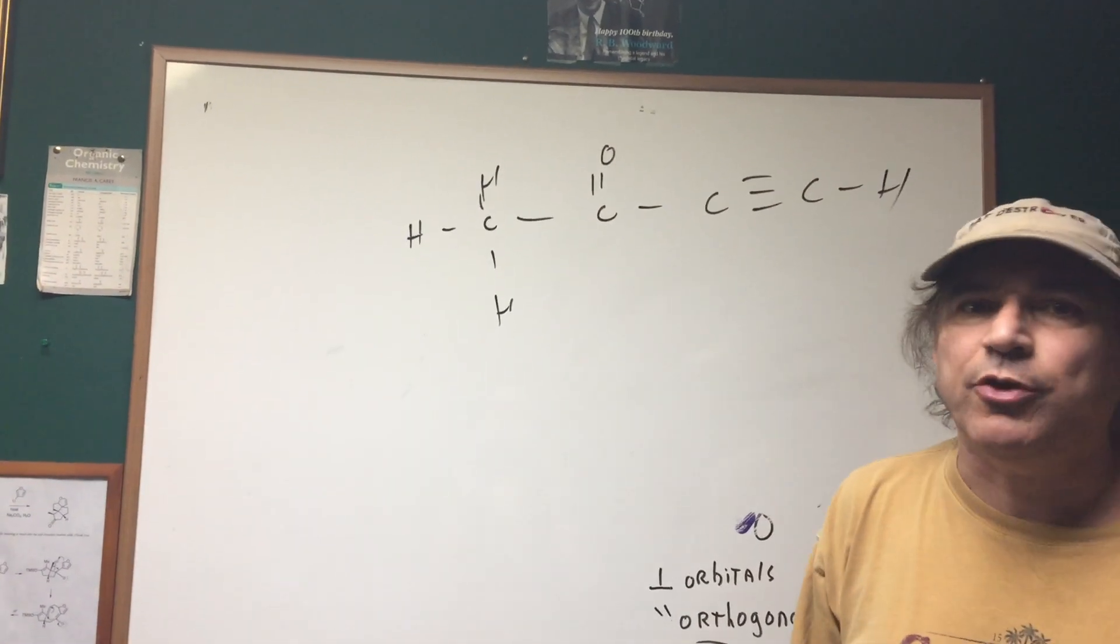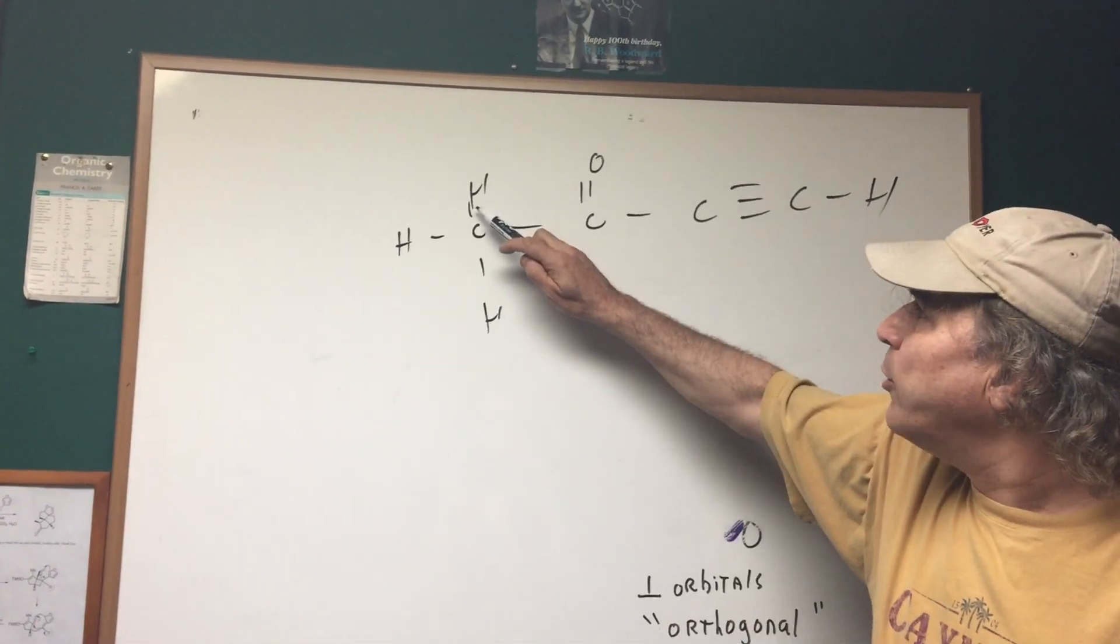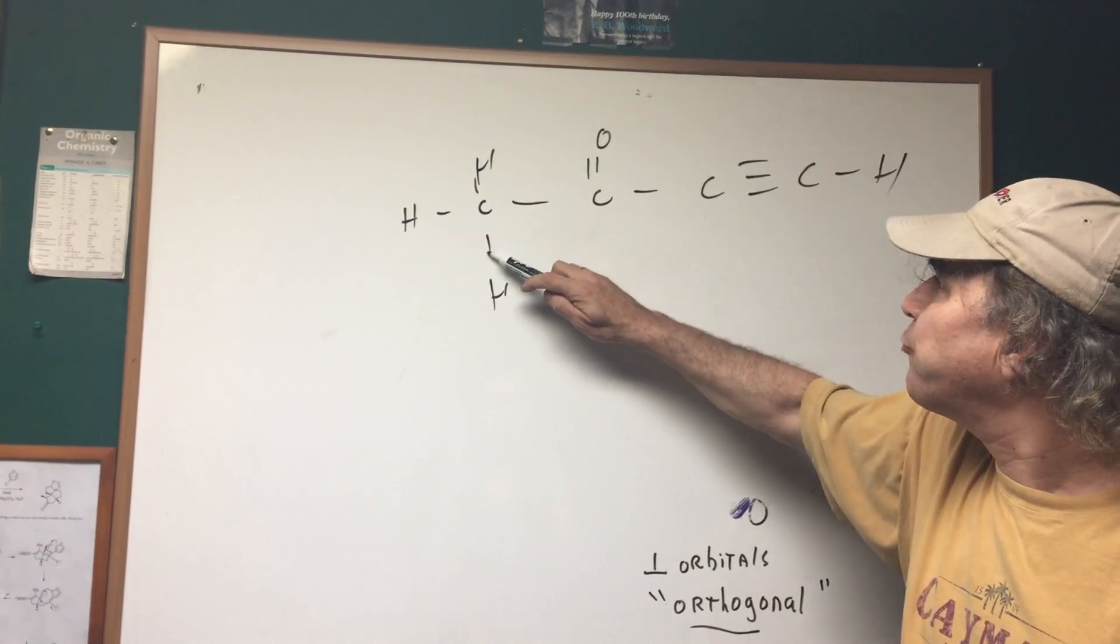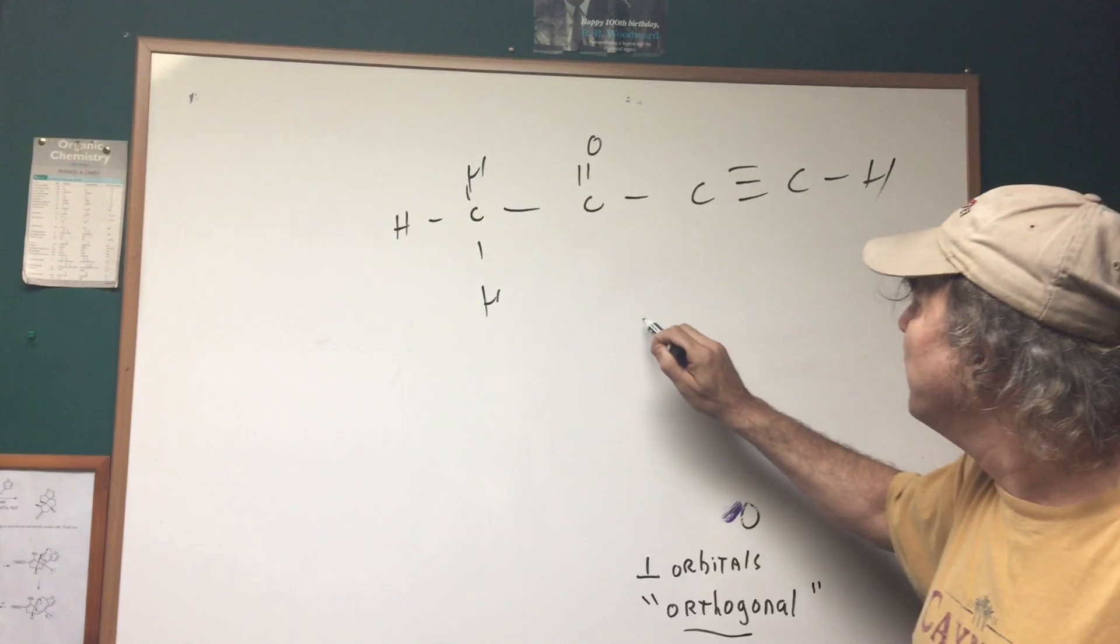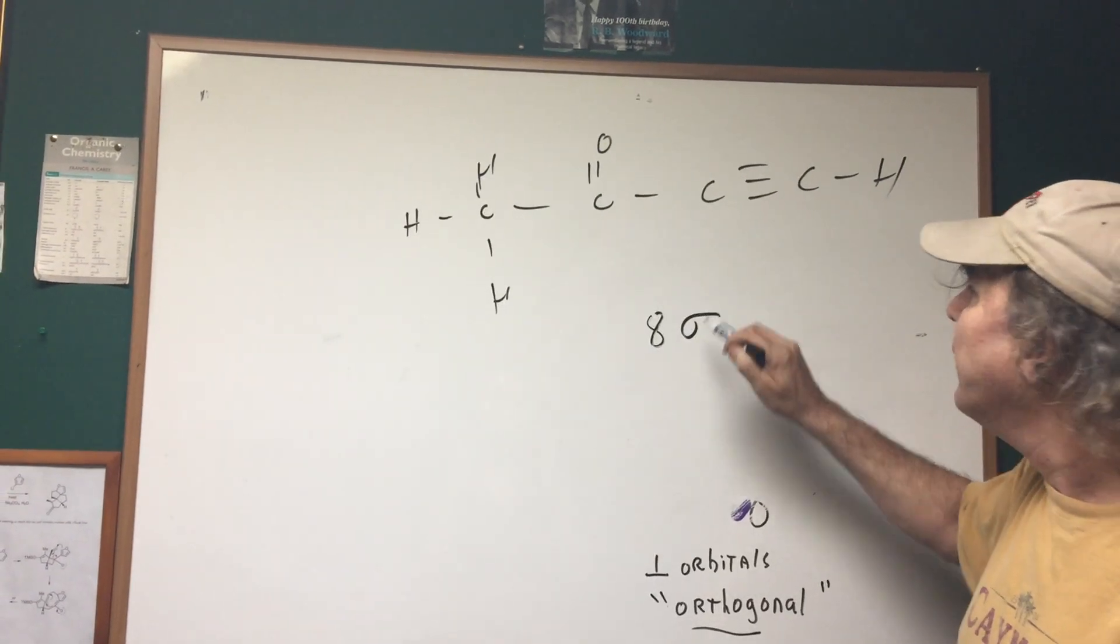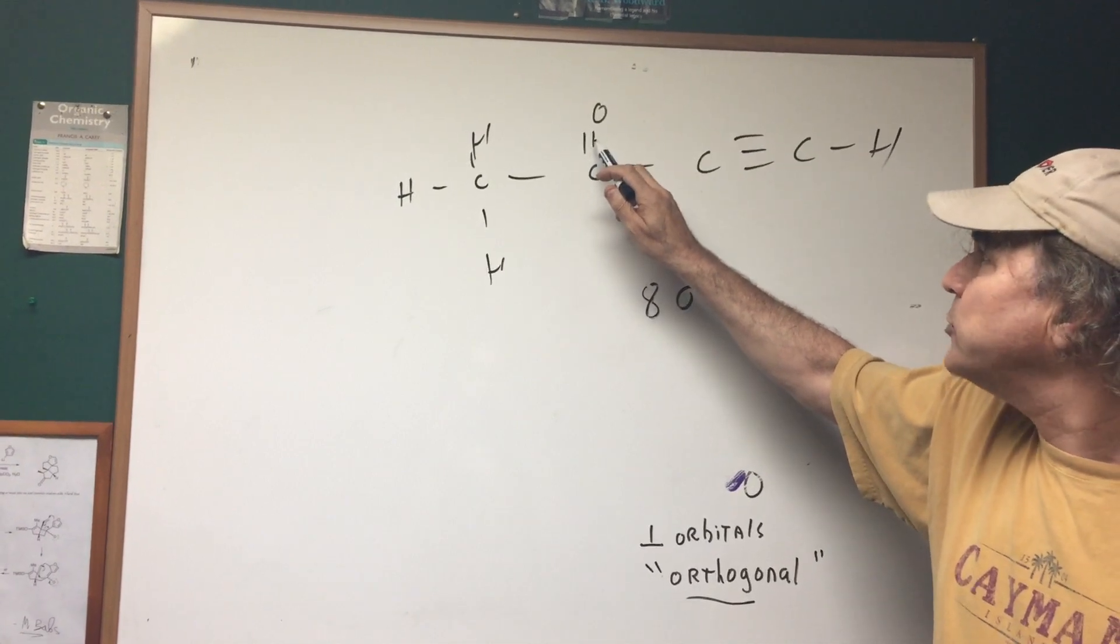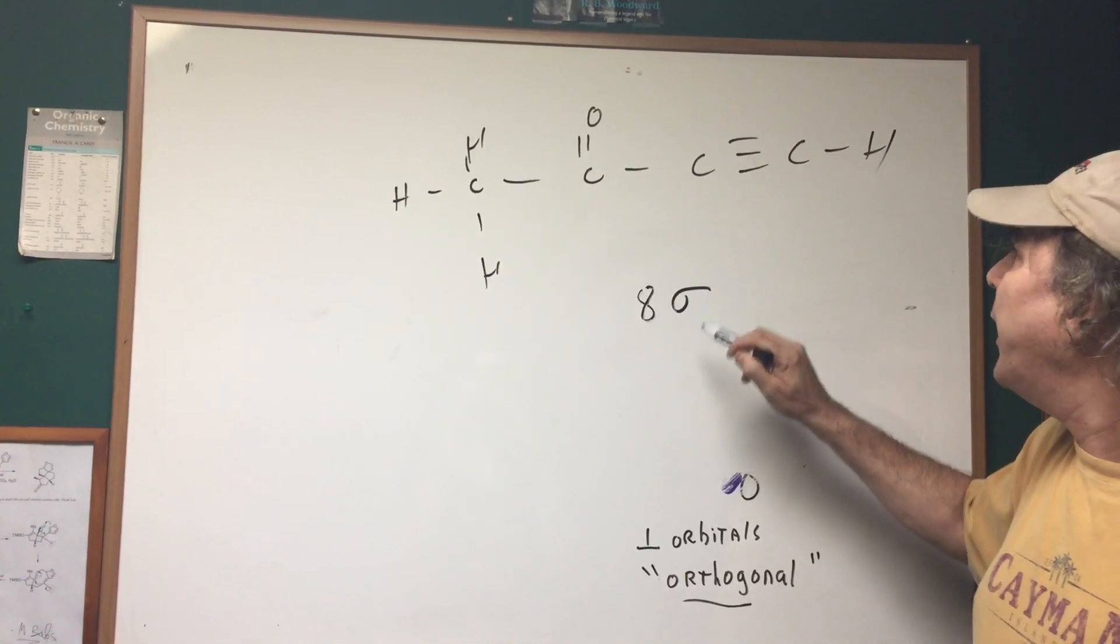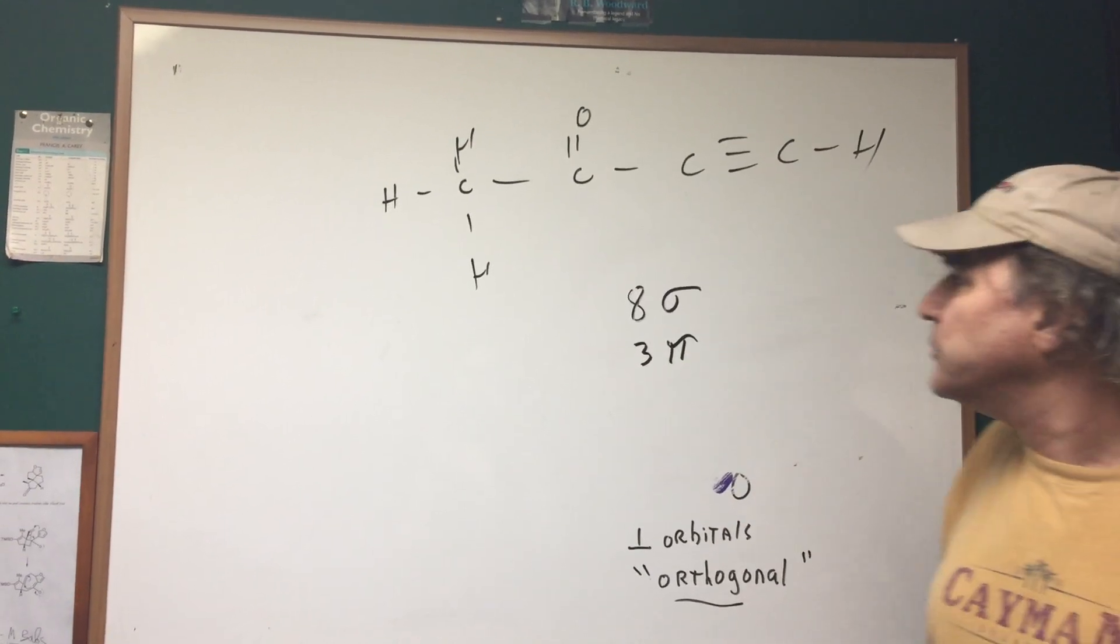That's the most common question you're going to see, like eight sigma, and a double bond there's one pi bond. So it's one pi bond here and two pi bonds here. So that would be a total of three pi bonds.